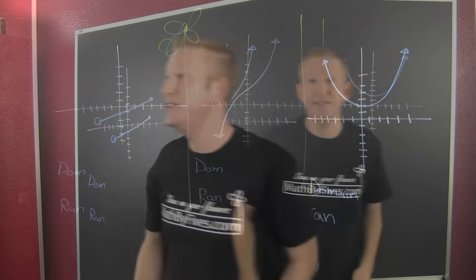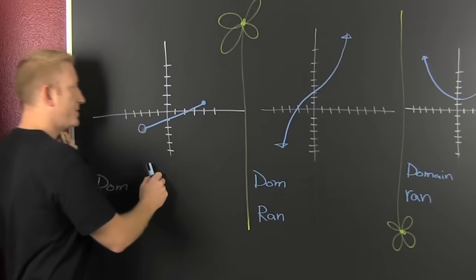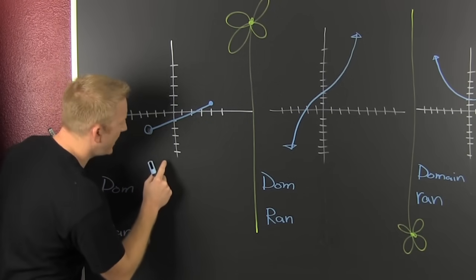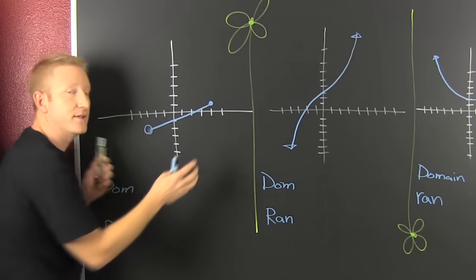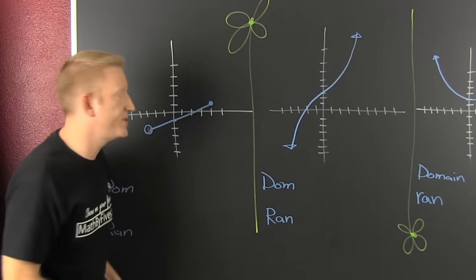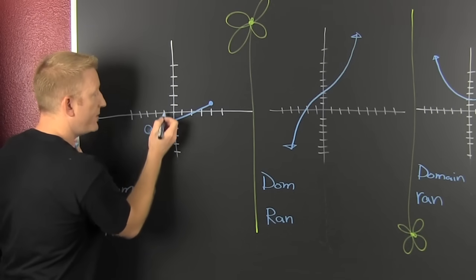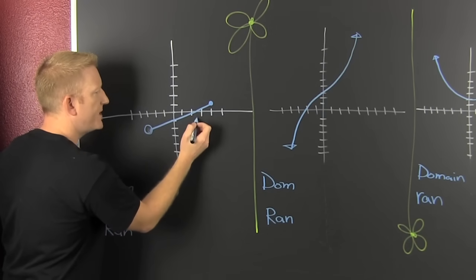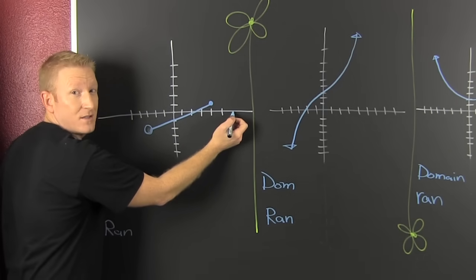Now that we have that definition, we know a little bit more about domain and range. The domain is the set of all x values, so I want to see which x values are being represented. This one's in there, and this one's in there, and this one's in there — all of these x values are represented.